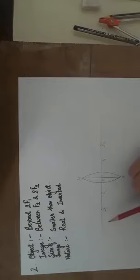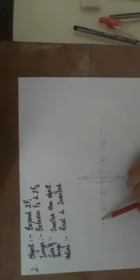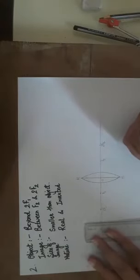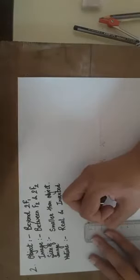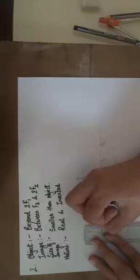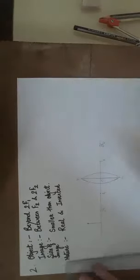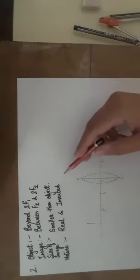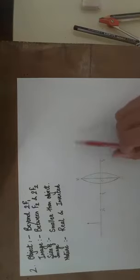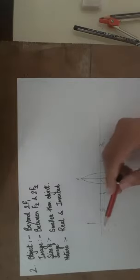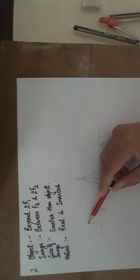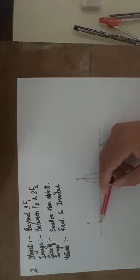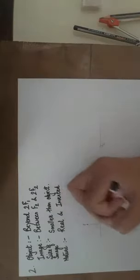Now, the position of the object is beyond 2F1. We will place the object beyond 2F1. With scale you will measure and draw the size of the object. Here I have marked it to be 2 centimeters. If you have notebooks, measure the number of lines, 2 lines or 3 lines. If you are doing it on a plain sheet of paper, then you use a scale. Like here it is 2 centimeters. Give it a name PQ, object PQ.